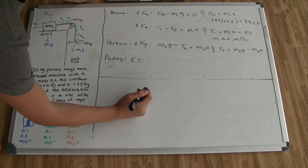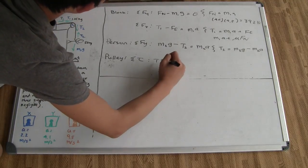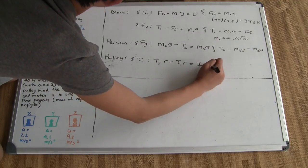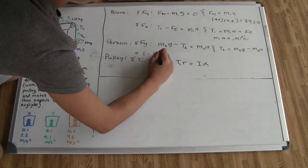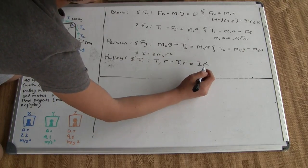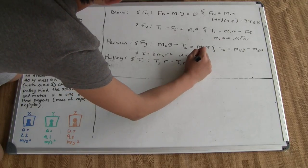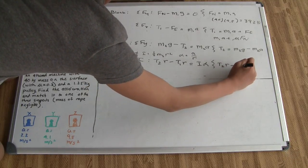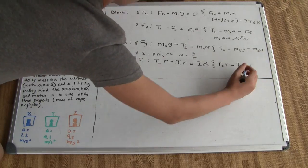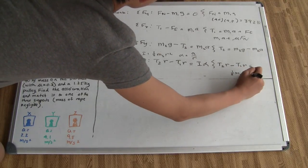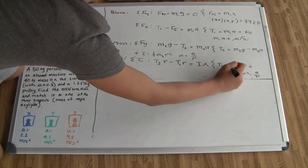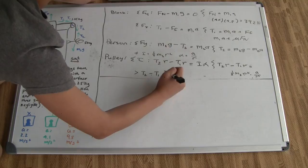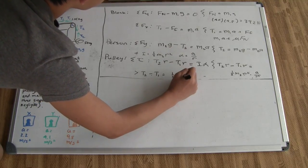Lastly, we consider the summation of torque on the pulley. Tension in the rope holding the person times radius, minus tension in the rope holding the block times radius, equals I·alpha. Here I equals one-half m₃r² since the pulley is a disk, and alpha equals acceleration divided by radius. The radii cancel out, leaving: T₂ − T₁ = one-half m₃ times acceleration.